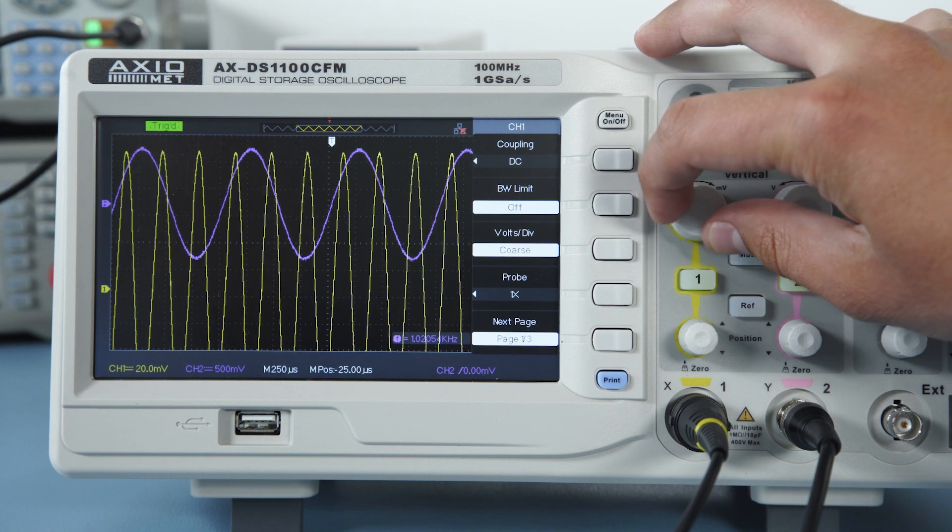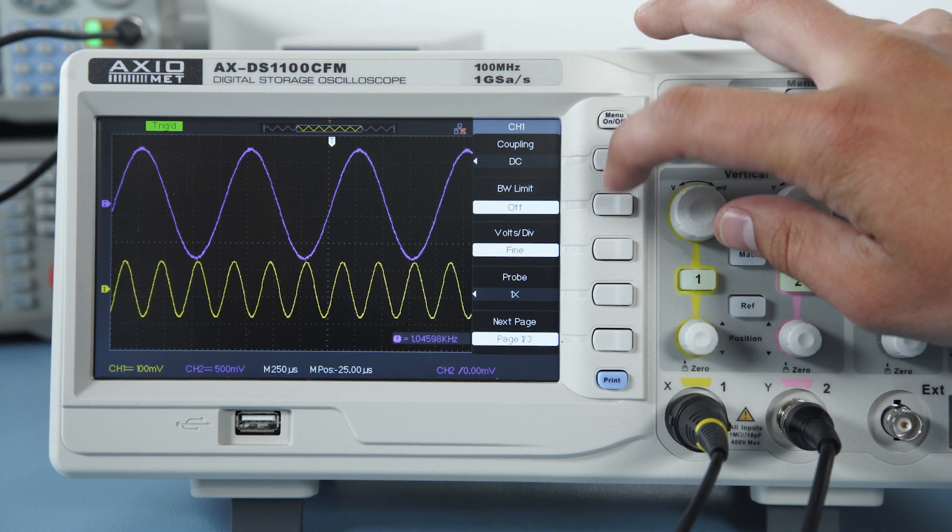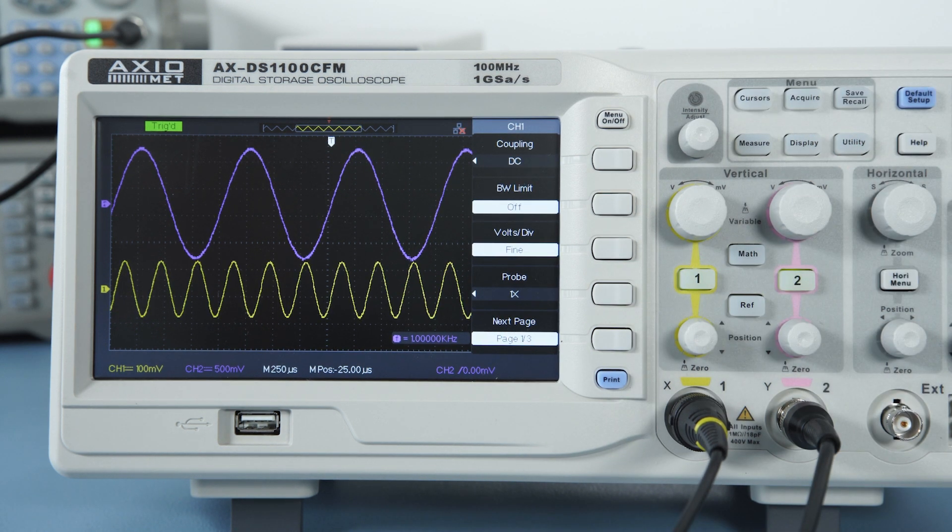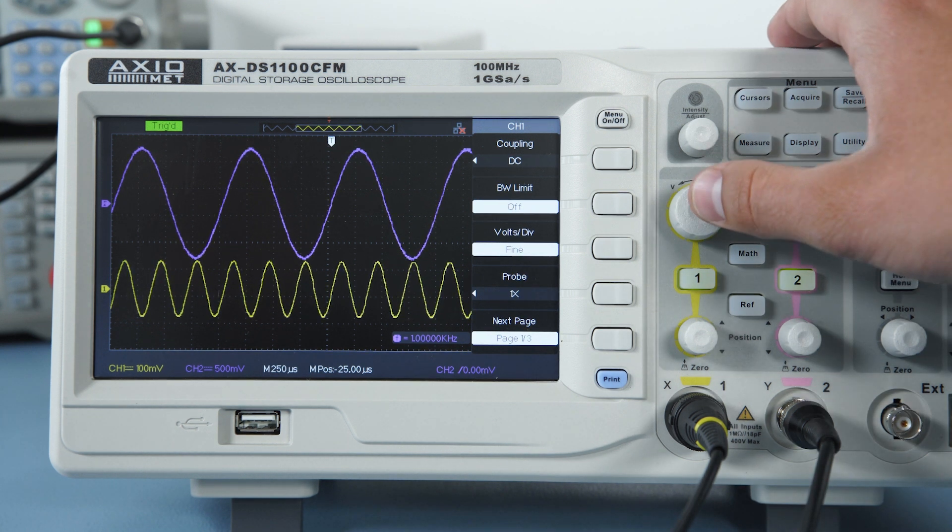Coarse is defined as 1, 2, and 5 jumps, whereas Fine has smaller steps which can increase waveform amplitude in between Coarse jumps. You can also switch between the modes by pressing the Volt Division knob.